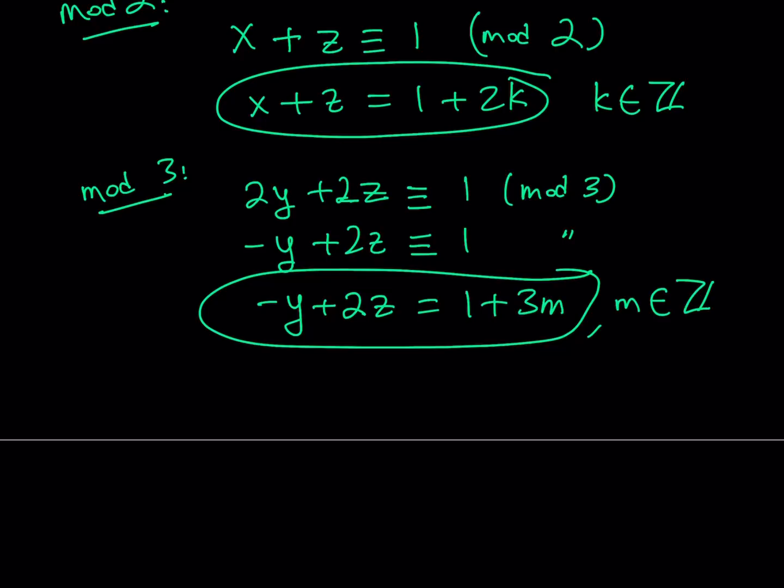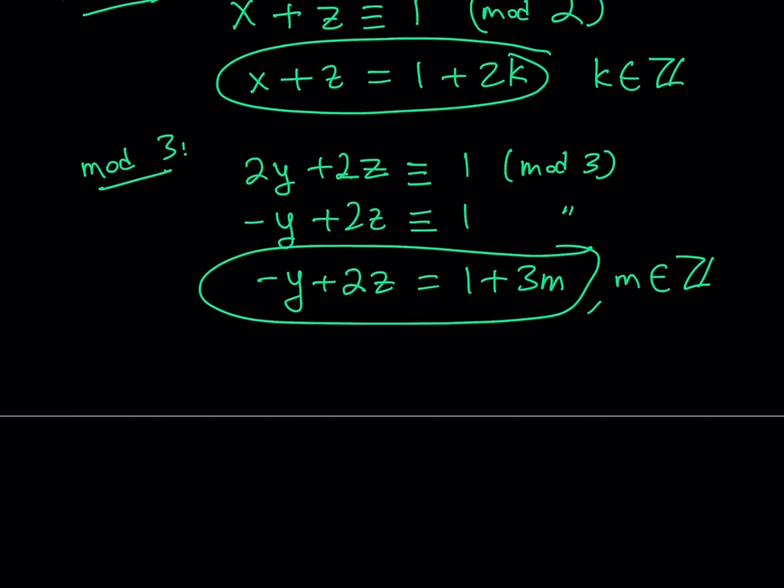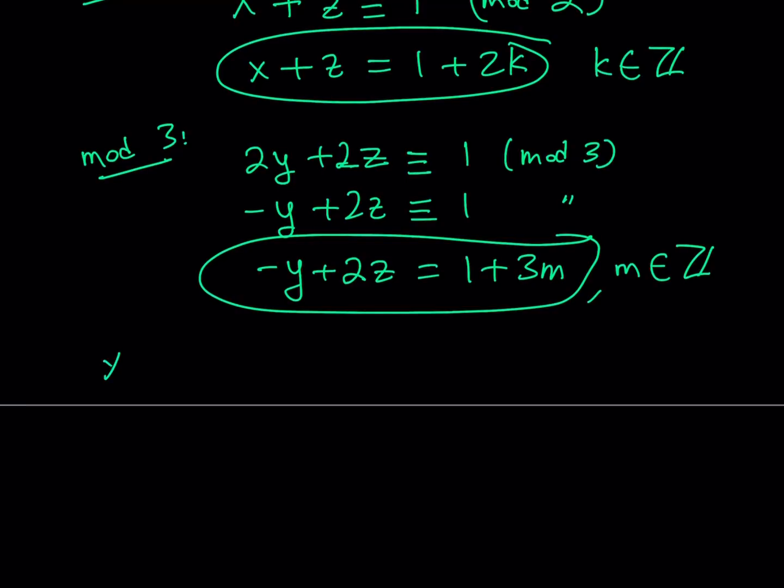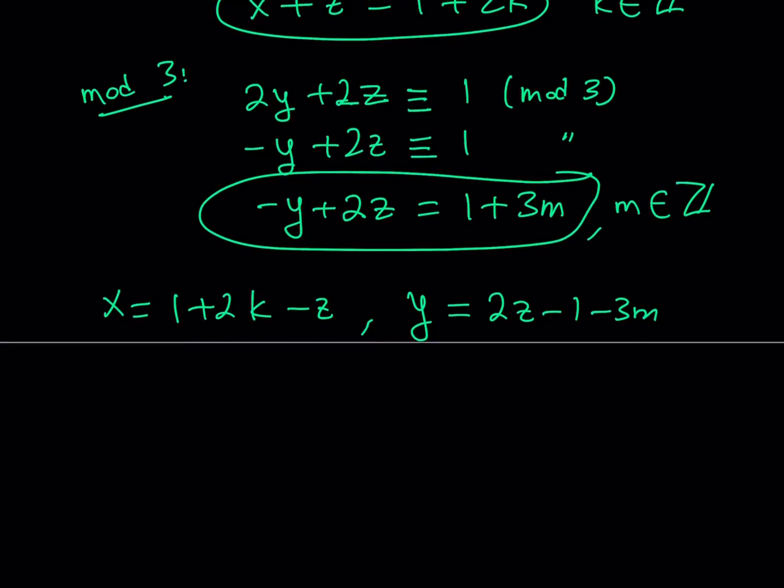We have two equations for x and y. Let's isolate the x and y from these equations. If I isolate x from the first equation, I get x equals 1 plus 2k minus z. And from the second equation, I get y equals 2z minus 1 minus 3m.